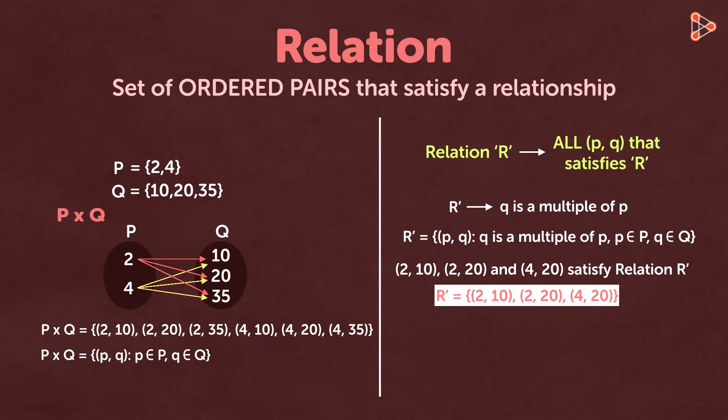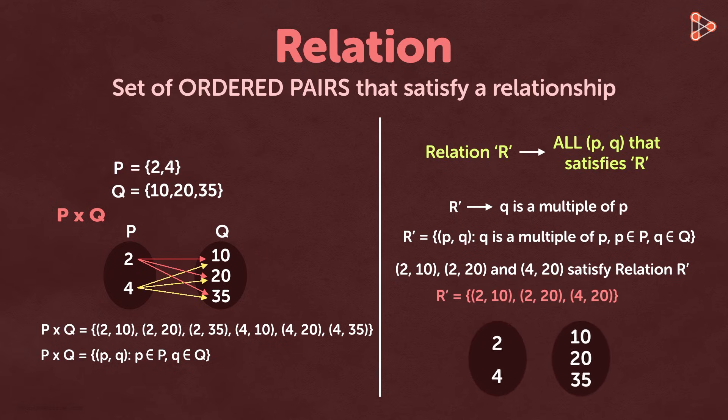Set R dash can also be represented using an arrow diagram. We draw an arrow for every ordered pair in set R dash. So we draw one arrow for 2 comma 10, another arrow for 2 comma 20, and another arrow for 4 comma 20.